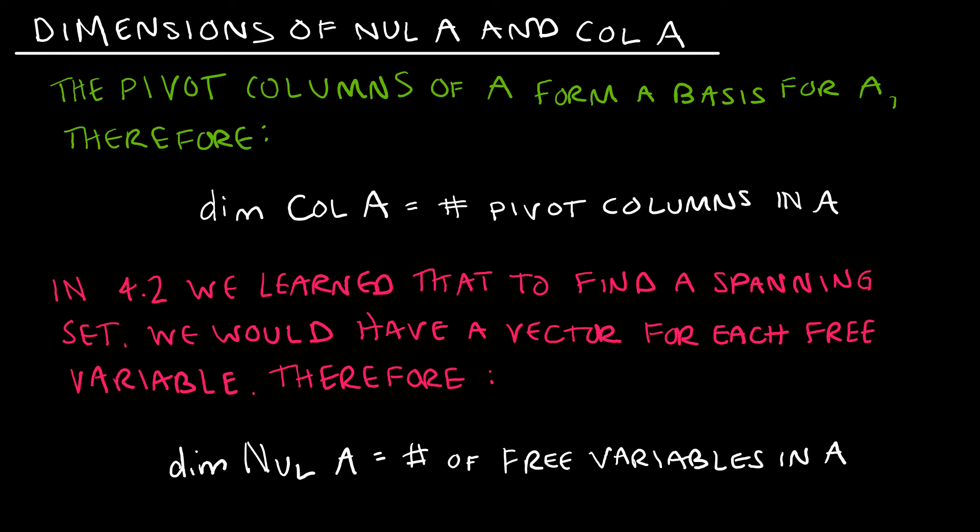Now let's shift gears and talk about the null space and column space of A. Recall what we know about A. The pivot columns of A will form a basis for A. And since the dimension is just the number of vectors in the basis, then the number of pivot columns in A is equal to the dimension of the column space of A.